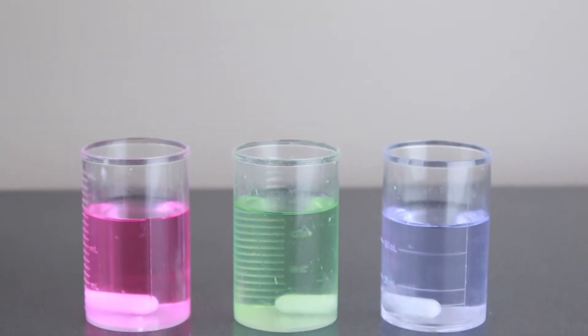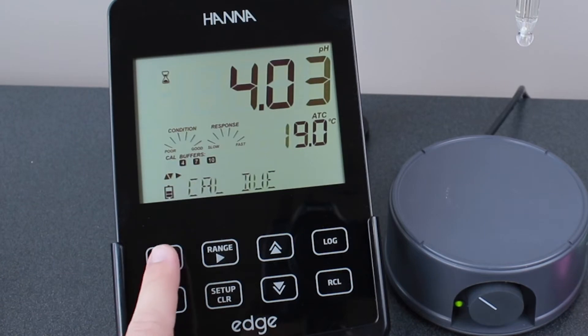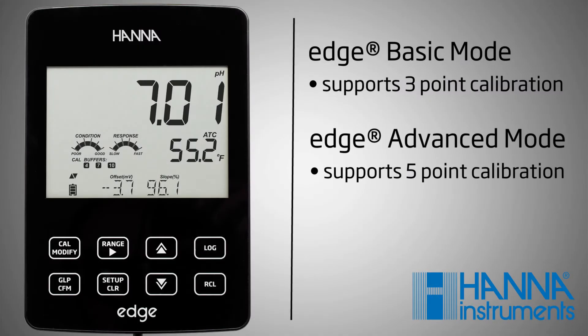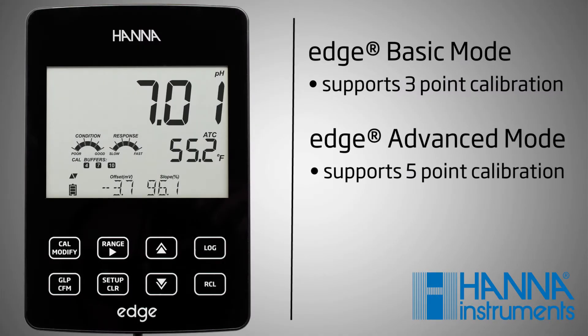To calibrate pH, first be sure your EDGE pH electrode is plugged into the meter and rinse it with deionized water. Pour your HANA buffer into separate beakers and press the CAL button to enter calibration mode. We recommend doing a three-point calibration with the standard 4.01, 7.01, and 10.01 buffers.